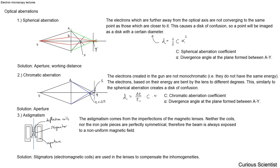So what kind of defects can occur on your images when you are using an electron microscope? There are basically three or four main defects or aberrations, and those are closely related to the structure of the microscope and also related to the working principles of the microscope. Let's discuss these four different things. The first one is the spherical aberration.